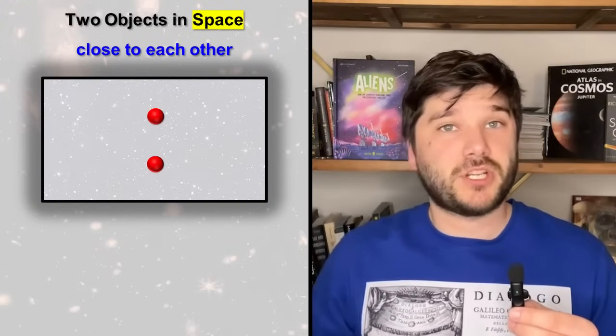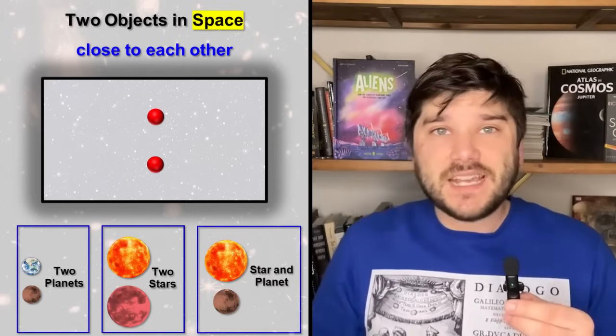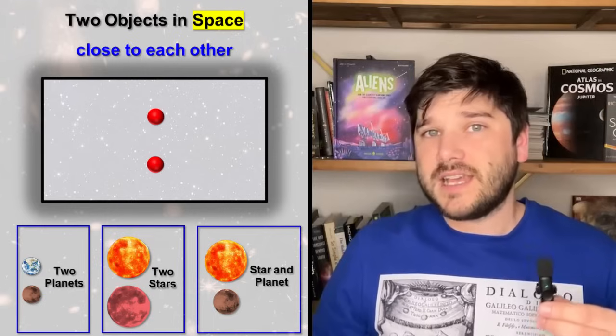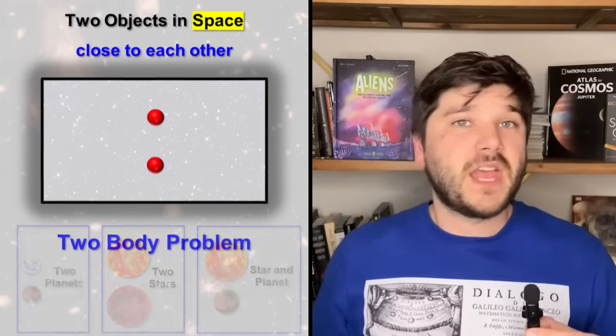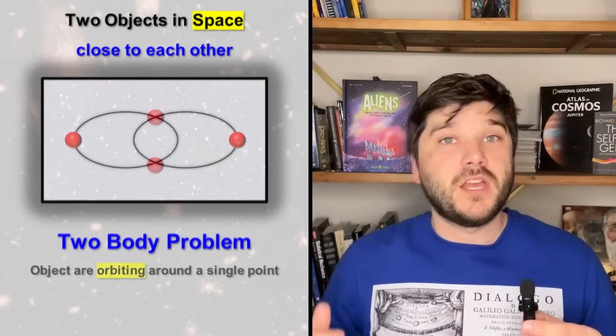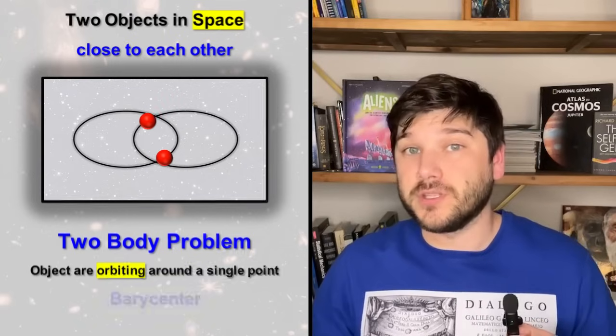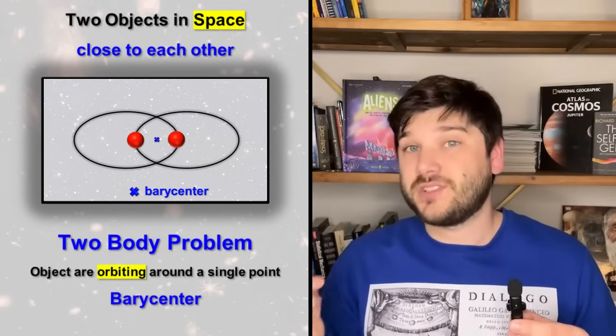Let's imagine the abstract two objects in space which are close enough to each other. It can be any two objects: two planets, two stars, a planet and a star. This system is simply called Two-Body Problem. Due to gravity around both objects, they start moving or orbiting around a single point. This point is called Barycenter.